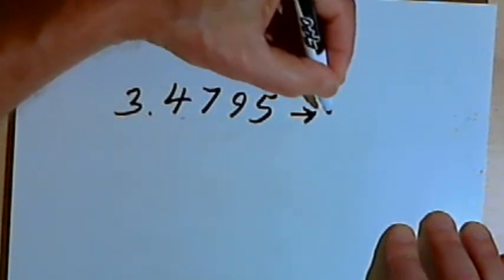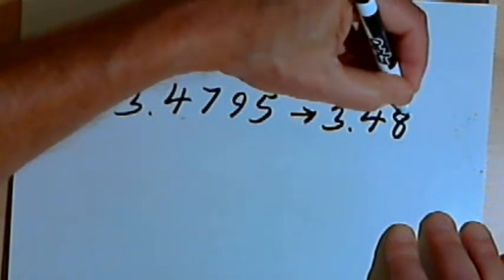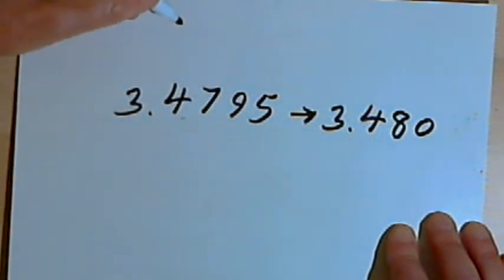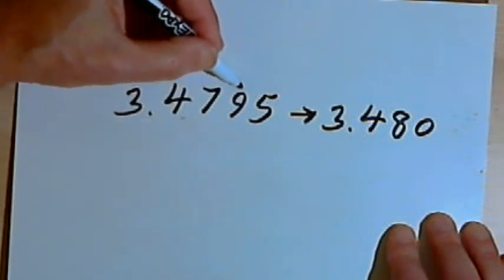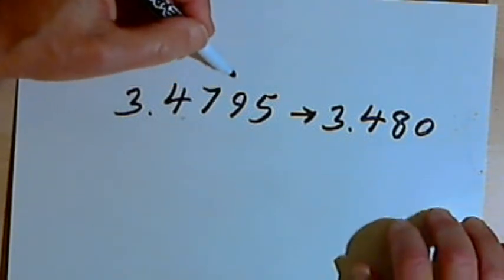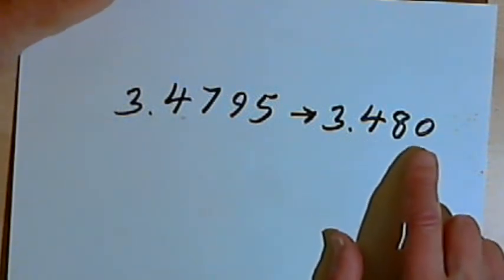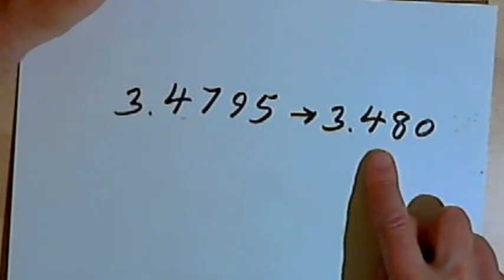When I round the number up, it's going to turn into 3.480, because I've got to round that 9 up one more, which is going to turn the 79 that I have into an 80. So now I have 3.480. Once again, I've got to leave that zero, because that says I've rounded this to three decimal places.